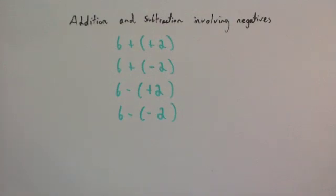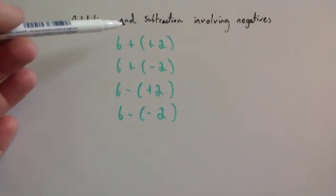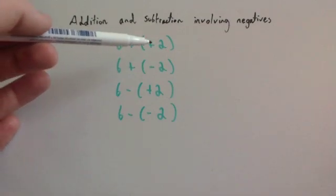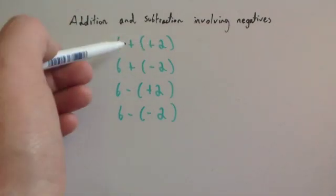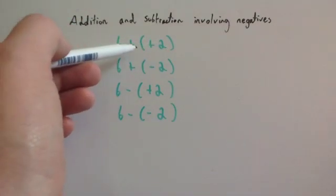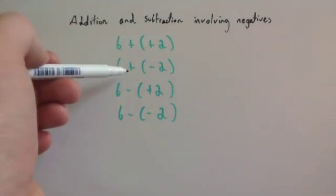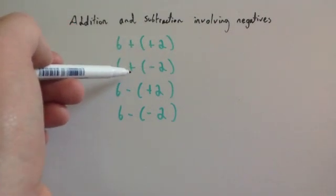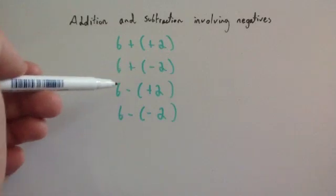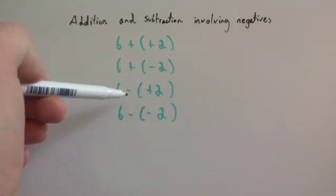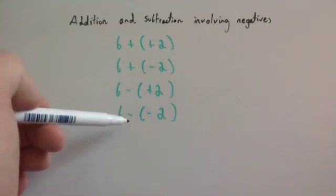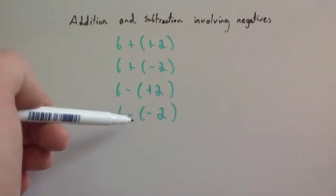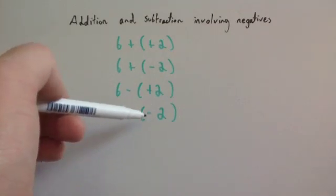That's quite straightforward. Whenever you've got a minus sign at the front of the question and you're adding and subtracting to it, you just either go up or down. Now let's have a look at what happens whenever you have two signs directly beside each other — so a plus and a plus, a plus and a minus, a minus and a plus, or a minus and a minus.